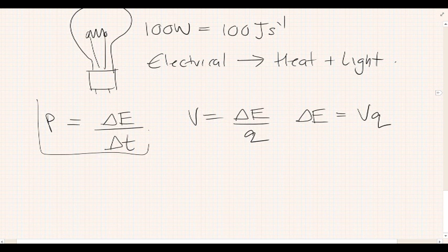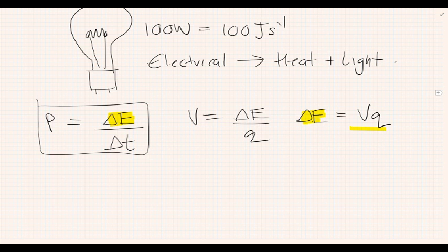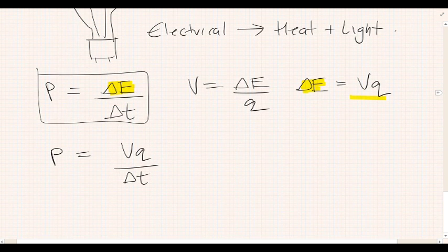So, in this formula here, rather than having changing energy, we can replace changing energy with V times Q. So, power in the formula becomes VQ over change in T. Now, if you look really closely, you'll see something familiar, Q over T.